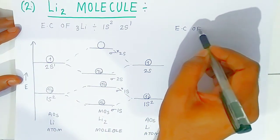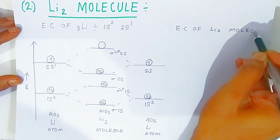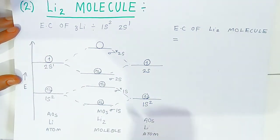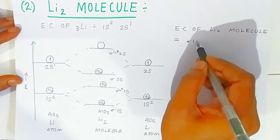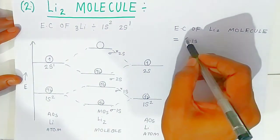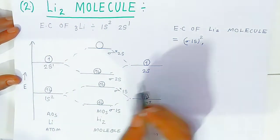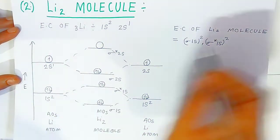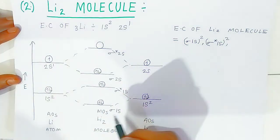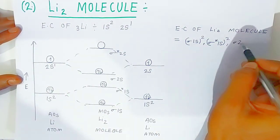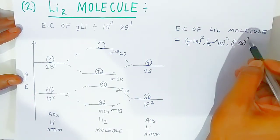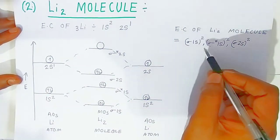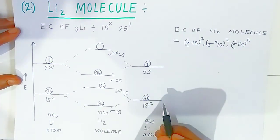From the molecular orbital diagram of lithium molecule, we can write its electronic configuration: σ1s², σ*1s², σ2s². The σ*2s has no electrons, so it is not included. This is the electronic configuration of the lithium molecule (Li₂).